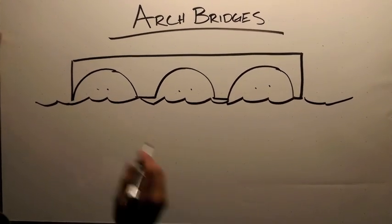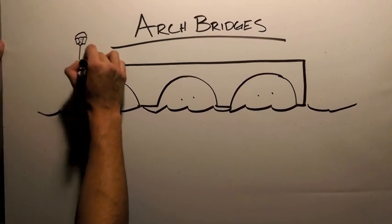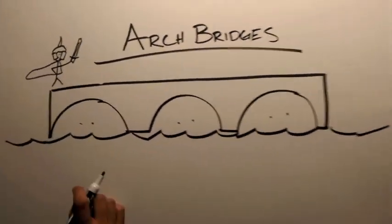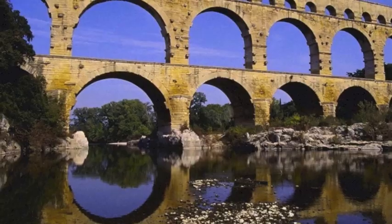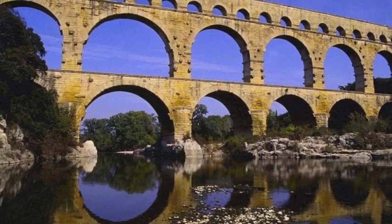This is why rows of arches, called arcades, are used a lot. The ancient Romans were famous for the use of arches in their bridges and even used them to deliver water over hundreds of miles to their cities. Arch bridges are good to use when designing over a valley.